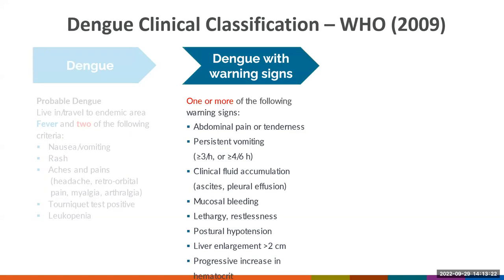If the patient presents with any of the following criteria, the clinical classification corresponds to dengue with warning signs: abdominal pain or tenderness; persistent vomiting, defined by WHO as three or more episodes in an hour or four or more episodes in six hours; clinical fluid accumulation; mucosal bleeding; lethargy or restlessness; postural hypotension; liver enlargement of more than two centimeters; and a progressive increase in hematocrit. These warning signs are very helpful to identify patients who might progress to severe disease and should be assessed in all patients with suspected dengue, as patients with warning signs should undergo medical observation or hospitalization.